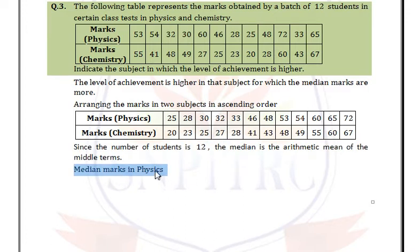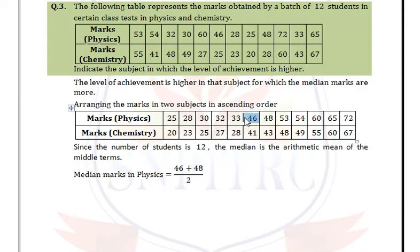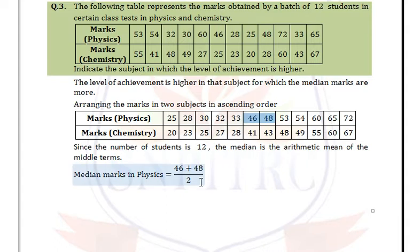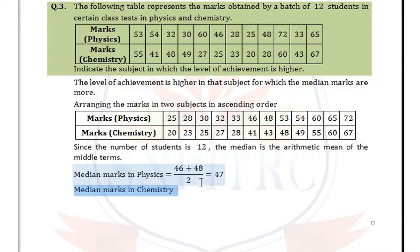The median marks in physics: the two middle values are 46 and 48, so the median is (46 + 48) / 2 = 47. Similarly, for chemistry the middle values are 41 and 43, so the median marks in chemistry is (41 + 43) / 2 = 42.